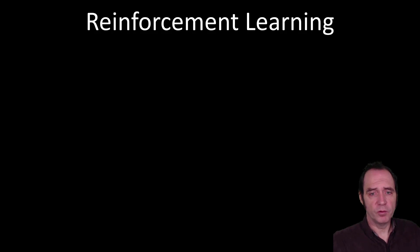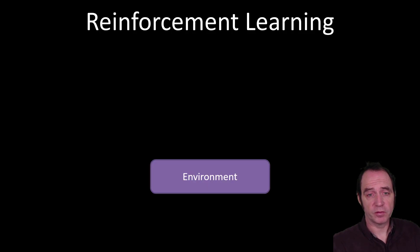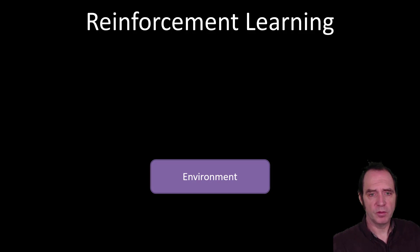With reinforcement learning, we don't have a dataset to start with. We're going to be using artificial intelligence to explore an environment. An environment is going to provide some kind of simulation or game that we can explore by making inputs and measuring the outputs — it could be a physics simulation, or it could be a game.